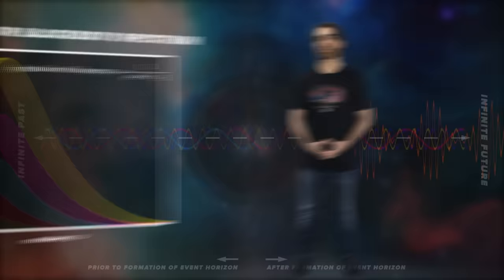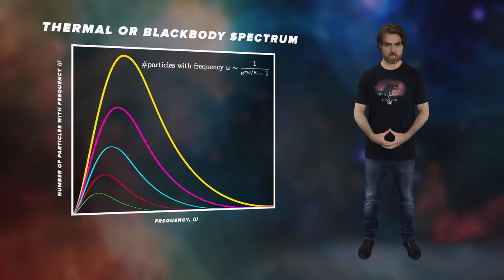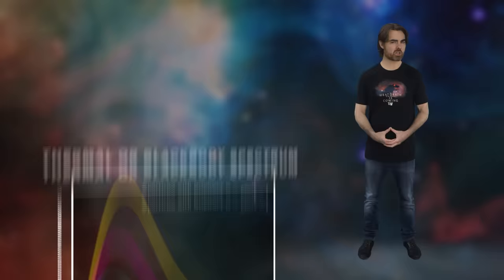So the more massive the black hole, the longer the wavelength of its radiation. Hawking calculated the frequency distribution of this radiation and found something incredible. It should look exactly like thermal radiation. Black holes should have a heat glow with an apparent temperature that depends on their mass.